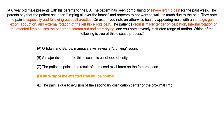If you're looking at choice A and wondering why it's incorrect — Ortolani and Barlow maneuvers revealing a clunking sound refers to developmental dysplasia of the hip. This is the test where you move the infant's hips around and feel for that clunking sound; it actually causes the infant no pain. But if a question wants you to select developmental dysplasia of the hip, they're going to give you an infant — a zero to two-year-old — not a six-year-old male who's playing baseball. So you wouldn't use the Ortolani or Barlow maneuver here, and that is not the correct answer.